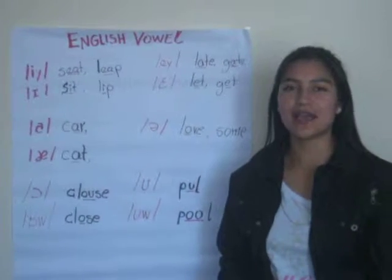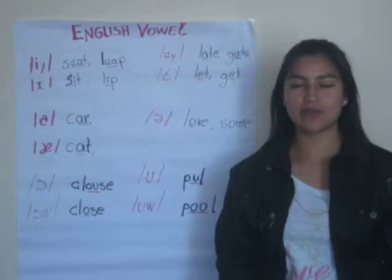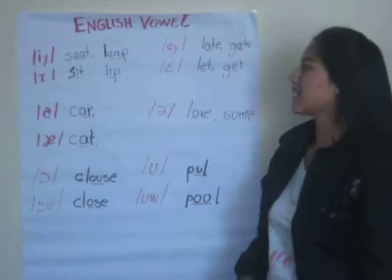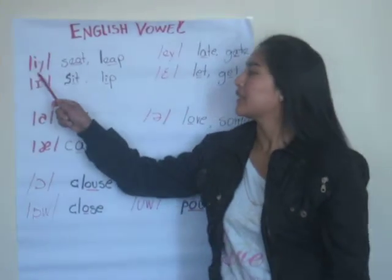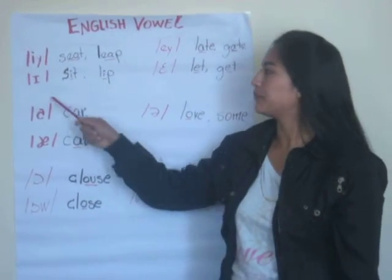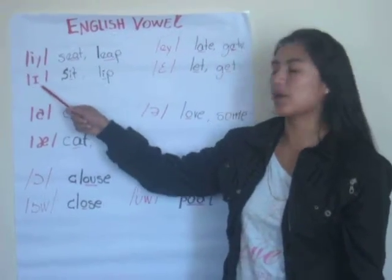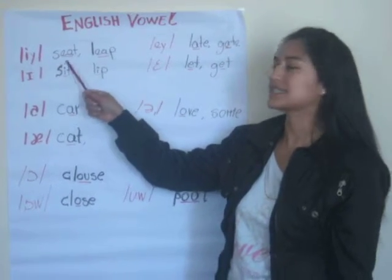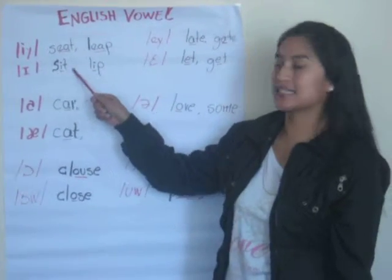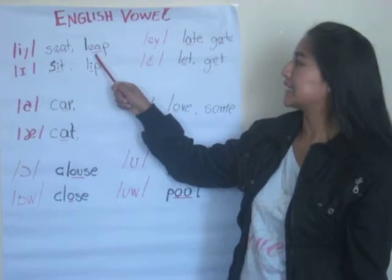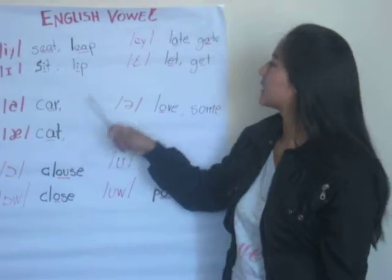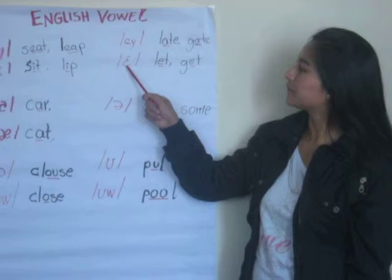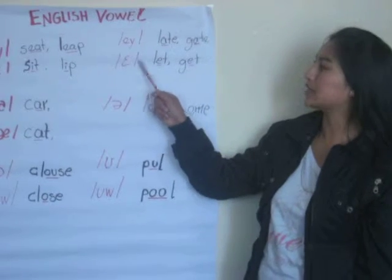I explained about this vowel. In English there are 11 vowels. For example, this vowel is long, this vowel is short. In this vowel, pronounce sit, set, leave. This vowel is long, this vowel is short.